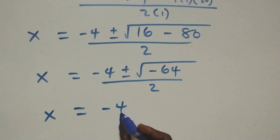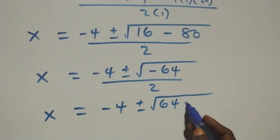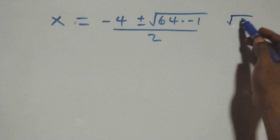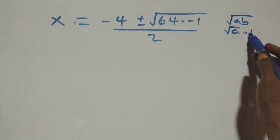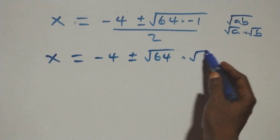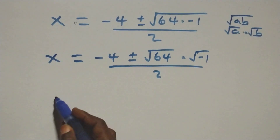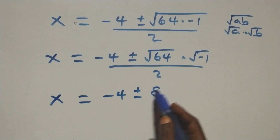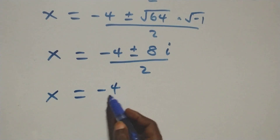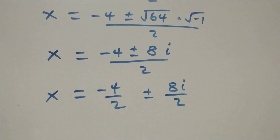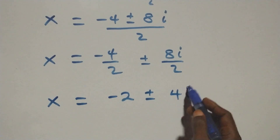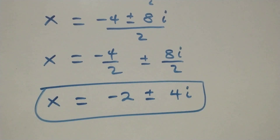Then x equals to minus 4 plus or minus square root of 64 times minus 1, over 2. Since root of A times B equals root A times root B, we have x equals to minus 4 plus or minus root 64 times root of minus 1, over 2. Root 64 is 8, and root of minus 1 is i, so x equals to minus 4 plus or minus 8i, over 2. Separating: x equals to minus 4 over 2, plus or minus 8i over 2, that's minus 2 plus or minus 4i.